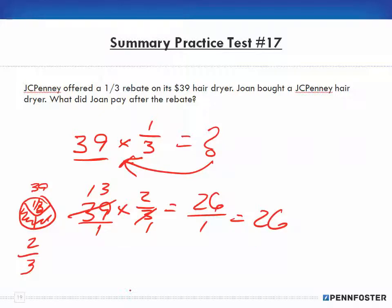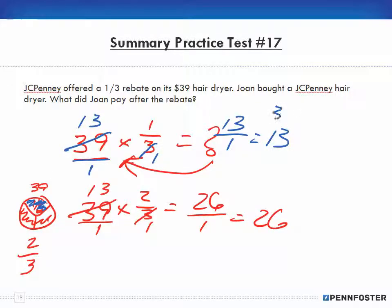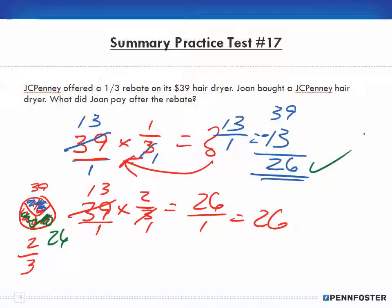If I had done it the other way, I would have said 39 over 1: 3 can go into 3 one time, 3 into 39 goes 13 times, so 13 times 1 is 13. My rebate was $13, but that's not how much I paid—that's the rebate portion. I need to subtract the 13 from the 39 to find the remaining portion, which is the $26. All right, that's it, and I'll see you in Chapter 3.